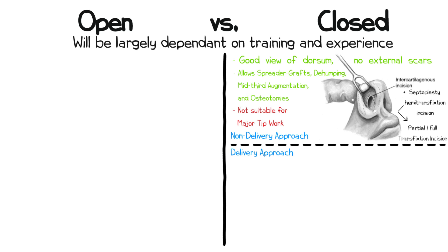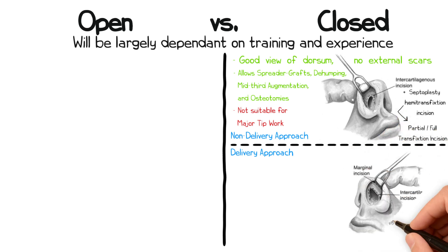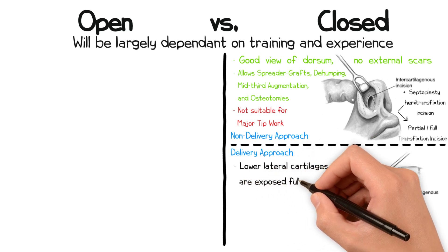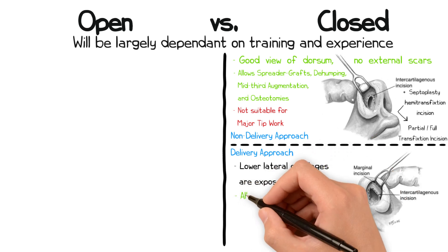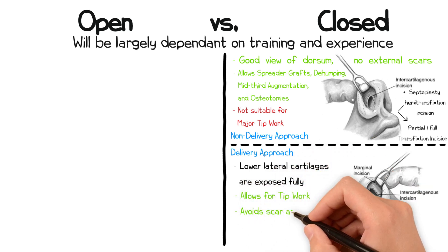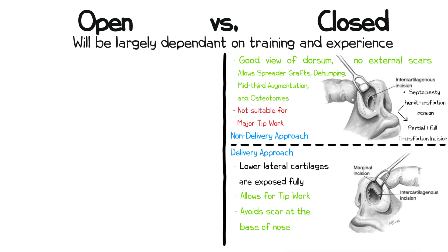A delivery approach utilizes the same previously described incisions, but additionally marginal incisions are also made to expose the lower lateral cartilages. These are combined with the intercartilaginous incisions and the lower lateral cartilages are brought out and exposed fully in order to carry out tip work, thereby avoiding a scar at the base of the nose.